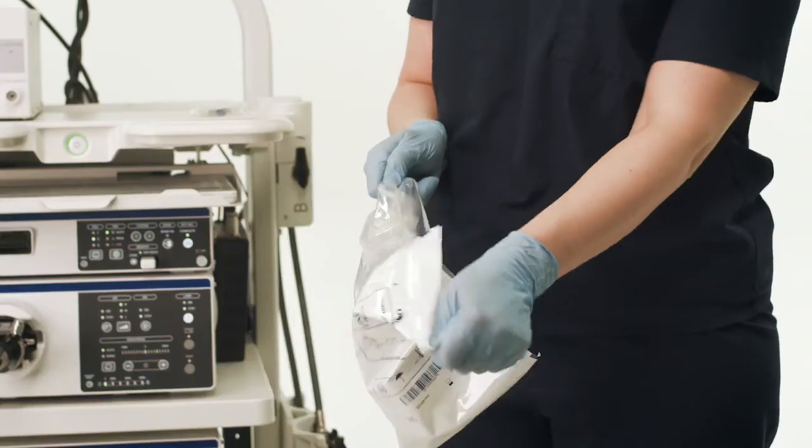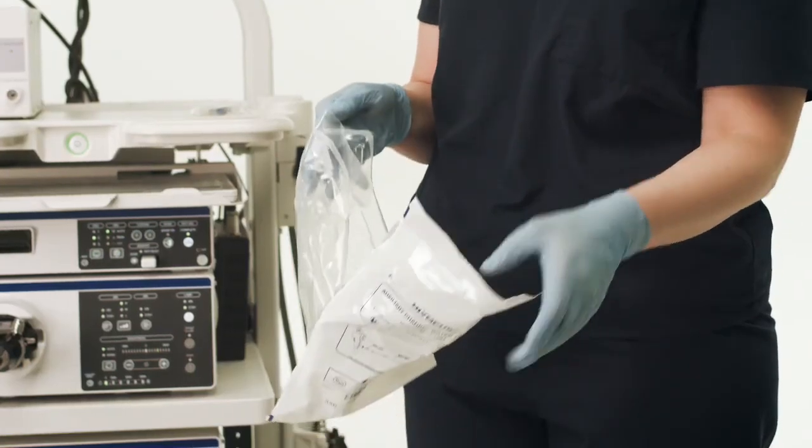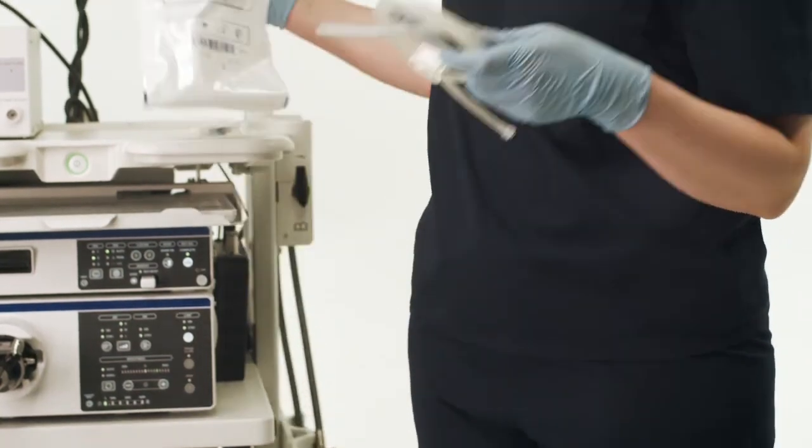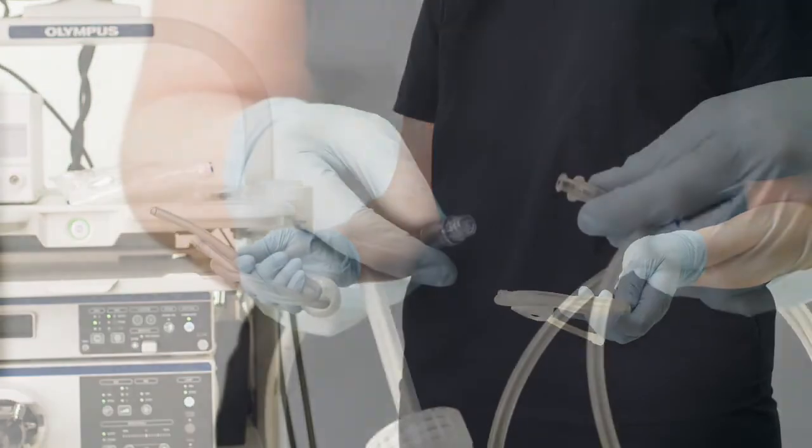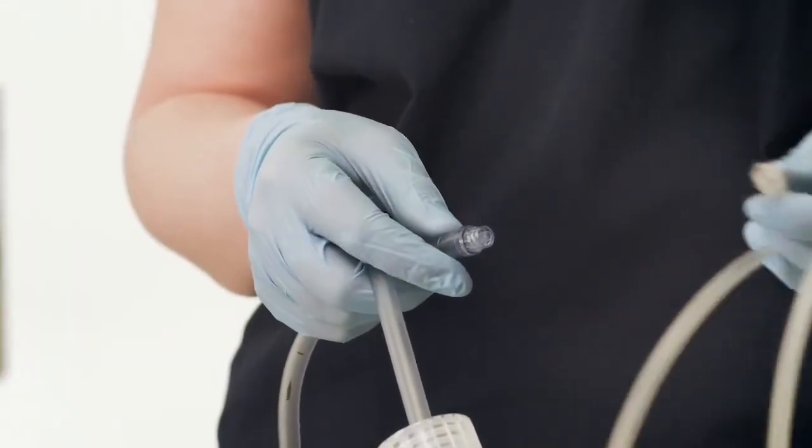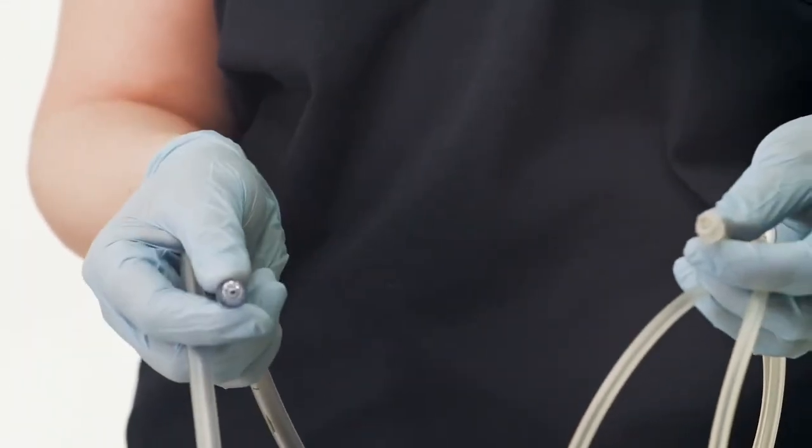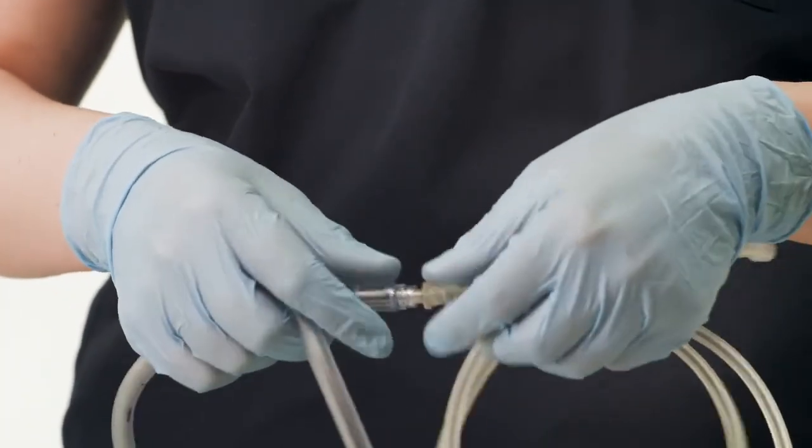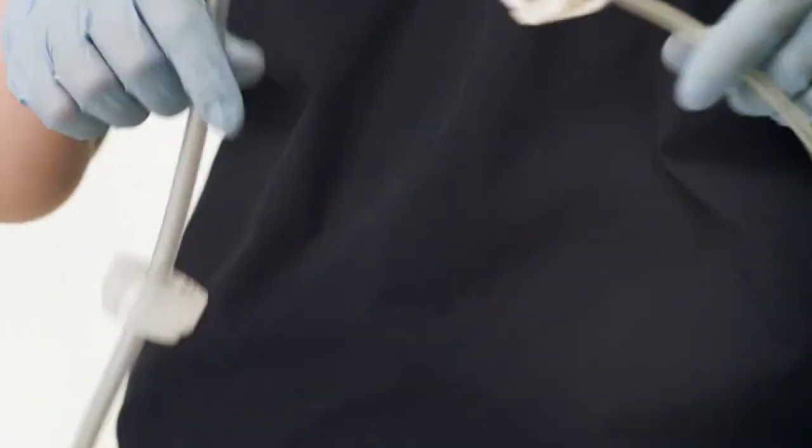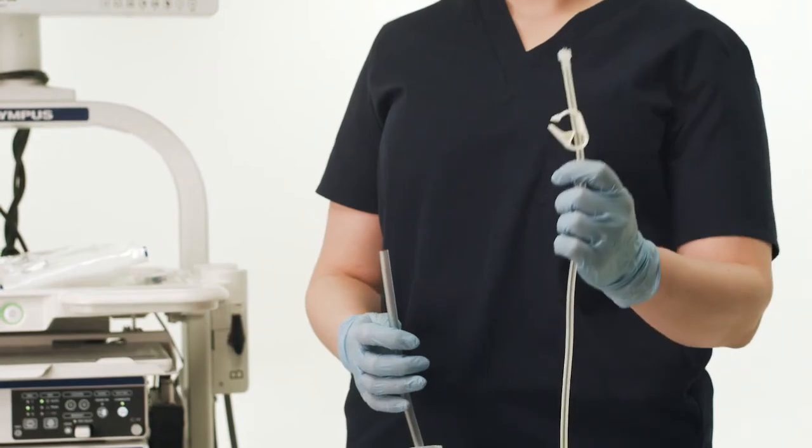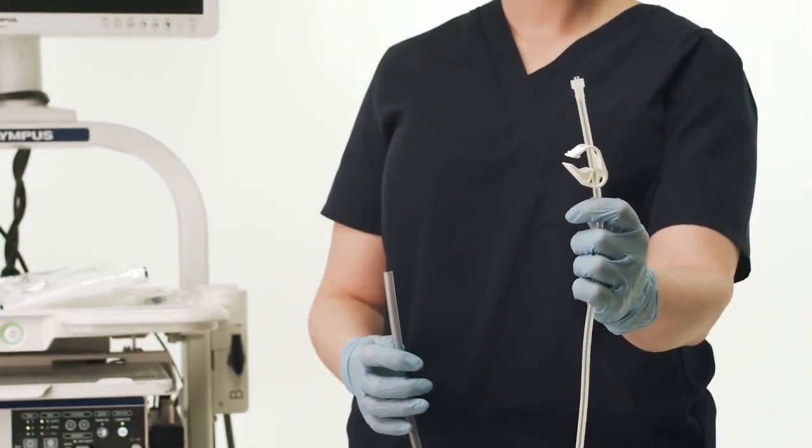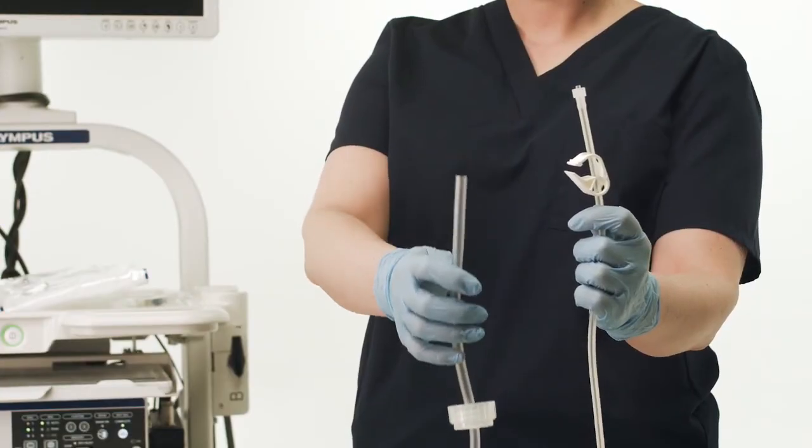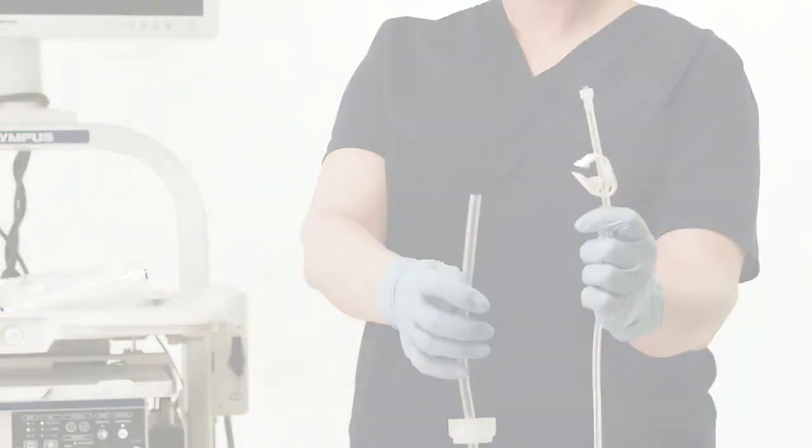First, open the MAJ 1651 sterile packaging and remove the two components of the auxiliary channel tube set. Locate the lure connectors on each tubing section and attach the two separate tubing sections to create one long tube. The tube's pinch clamp should be located on the tubing section ending with a lure connector with the scallop cut tube on the opposite end.